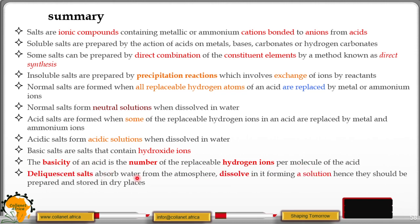The basicity of an acid is the number of the replaceable hydrogen ions per molecule of the acid. Deliquescent salts absorb water from the atmosphere, dissolving it, forming a solution. Hence, they should be prepared and stored in dry places.